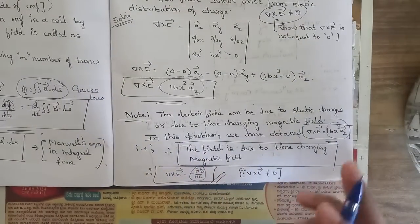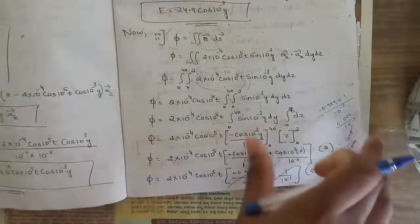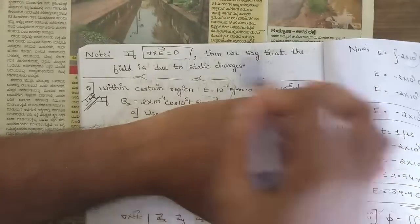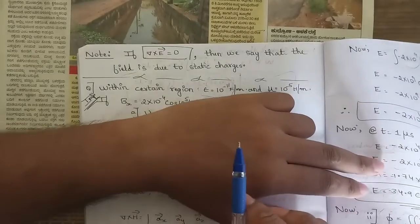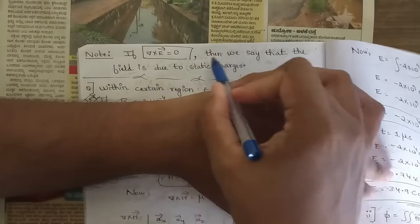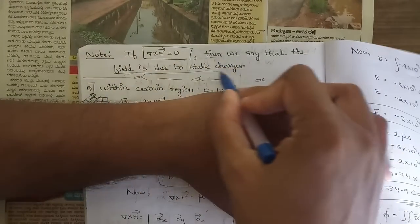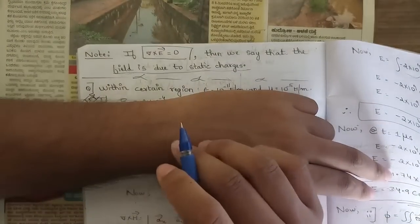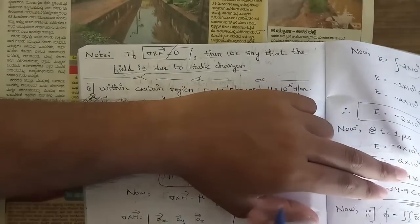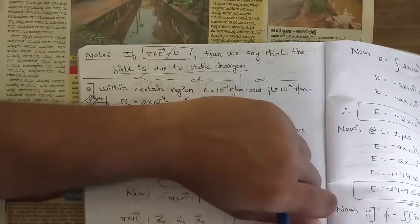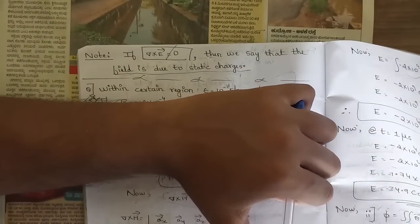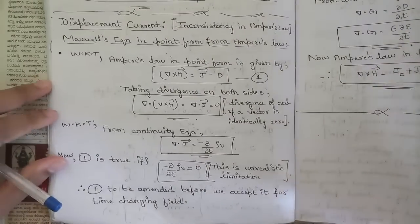As a note: if ∇×E = 0, then we say the field is due to static distribution of charge. If ∇×E ≠ 0, then the field is not due to static distribution of charge — it is due to a time-changing magnetic field. This is the key interpretation to remember from this problem.